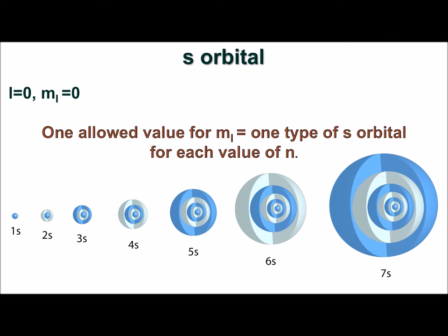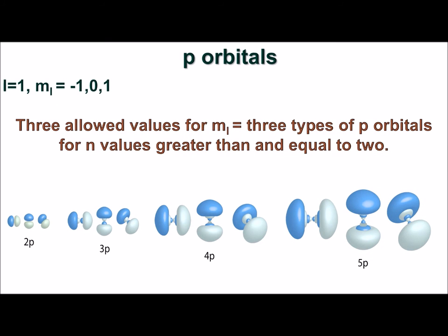For all P orbitals, L equals 1. m sub L may have three values: 1, 0, and negative 1. This means that there are three types of P orbital for each value of n greater than and equal to 2.